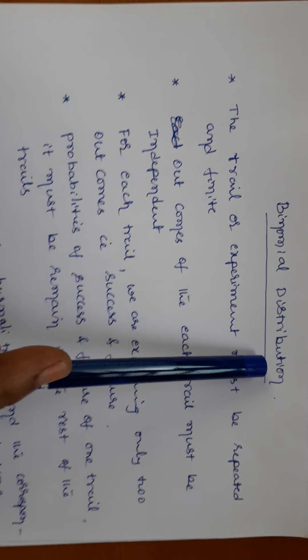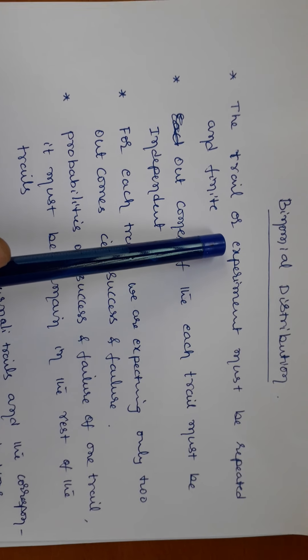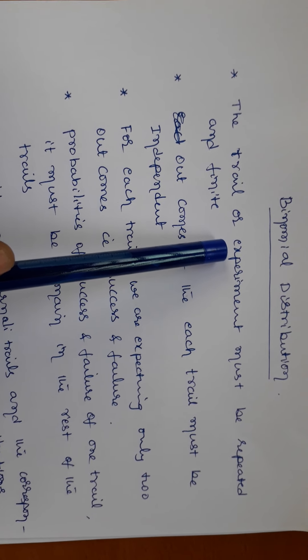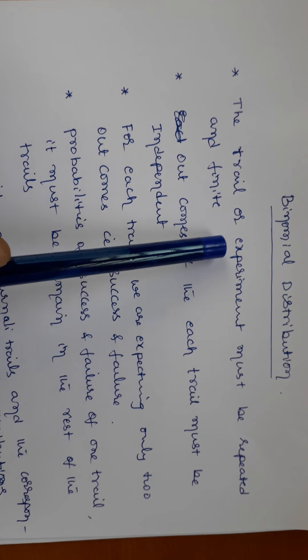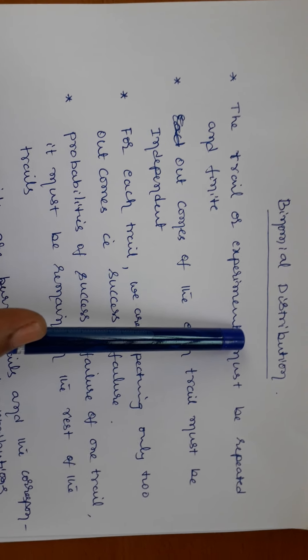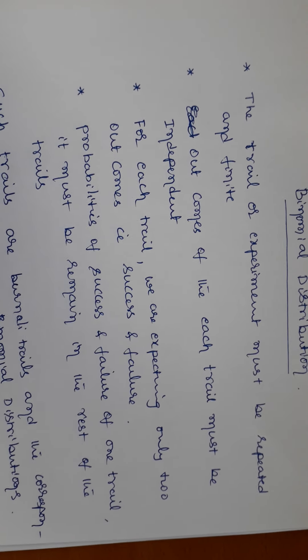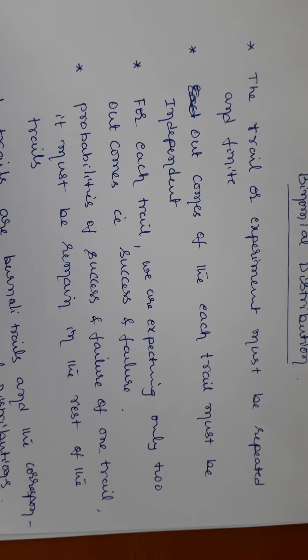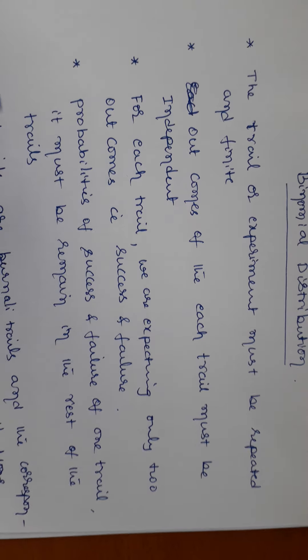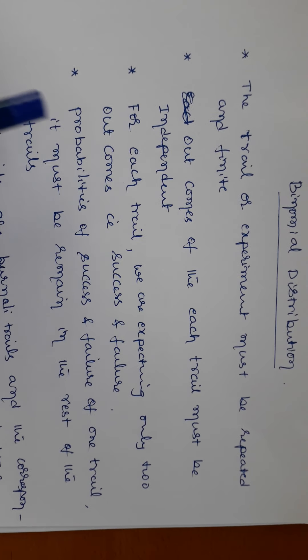In previous classes we discussed discrete random variable distribution. Under discrete random variable distribution, there are two distributions at the engineering level: binomial distribution and Poisson distribution. Now the question is: in which case do we go for binomial distribution?